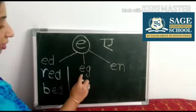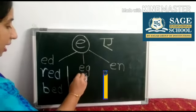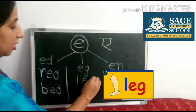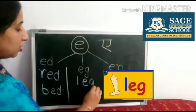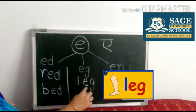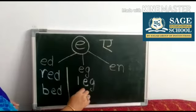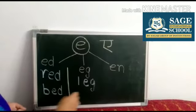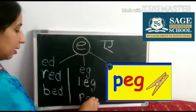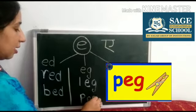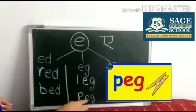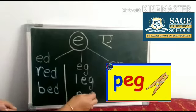With E, G, G — Egg. L, E, G — Leg. P, E, G — Peg.